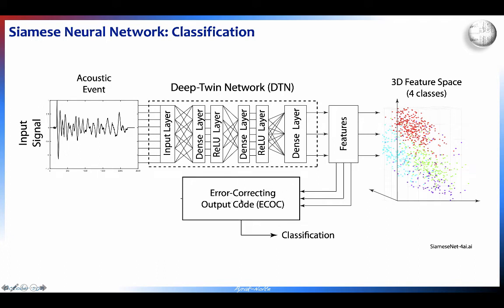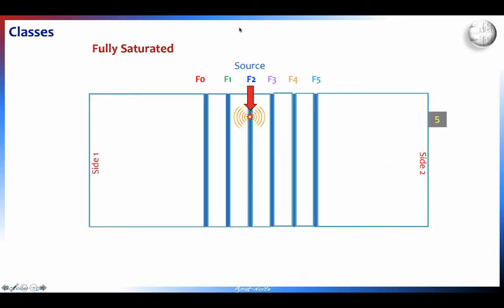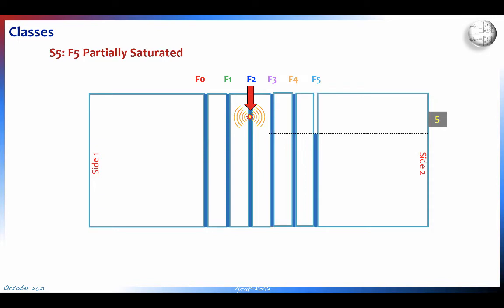Once we do the dimensionality reduction — in this case down to three features — we put that into a standard multi-class classifier in MATLAB using something called an error correcting output code, or ECOC, trained separately on the three-dimensional feature set. This shows four different saturation conditions separating pretty nicely in the three-dimensional latent space: fully saturated, partially saturated fracture 3, partially saturated fracture 5, and partially saturated both fractures 3 and 5.